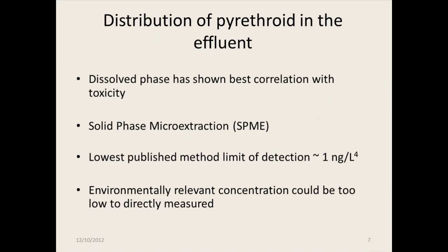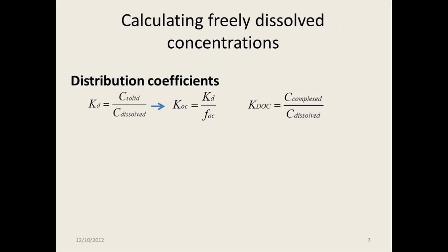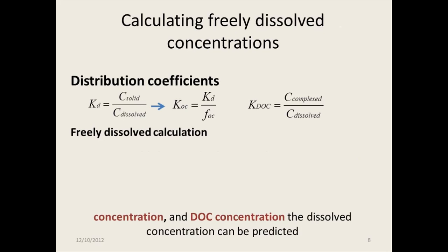Now I'm going to move on to the distribution of the pyrethroid in the effluent. Jay has done a lot of work on this, and he's shown that the dissolved concentration shows the best correlation with toxicity. Usually, the technique people use to directly measure the dissolved-phase concentration is solid-phase microextraction. The lowest detection limit I've seen published is around one nanogram per liter — that's Jay's number. Some of the environmentally relevant concentrations people are looking at with the new proposed TMDL are below one nanogram per liter.